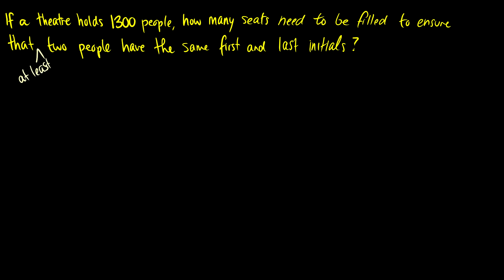Okay, so what's the condition here that we have to satisfy? Two people have the same first and last initials. Well, how many ways are there to make first and last initials? Our first initial, we have 26 options. Our last initial, we have 26 options. So there's 26 squared ways to make first and last initials.